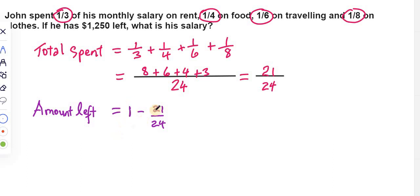The amount left is equal to, let's write it as one minus 21 over 24. The one here represents the entire monthly salary, a whole.